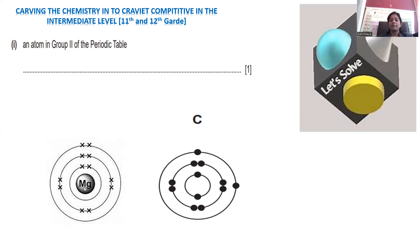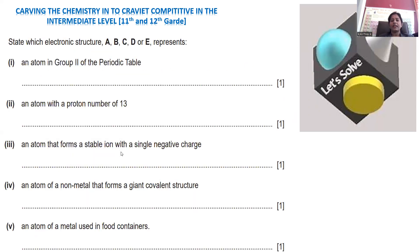Magnesium's atomic number is 12: 1s2, 2s2, 2p6, 3s2. The outer shell is resided with two electrons in the s orbital, so we can say it is the second main group element. This is the way we can answer question number one.